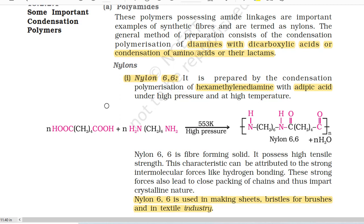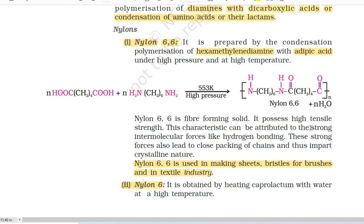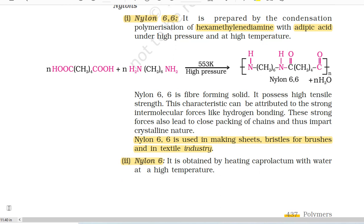First, Nylon-6,6. It is prepared by the condensation polymerization of hexamethylene diamine with adipic acid under high pressure and at high temperature (553 K) to give nylon-6,6. Nylon-6,6 is a fibre-forming solid. It possesses high tensile strength. This characteristic can be attributed to the strong intermolecular forces like hydrogen bonding. These strong forces also lead to close packing of chains and thus impart crystalline nature. Nylon-6,6 is used in making sheets, bristles for brushes and in the textile industry.